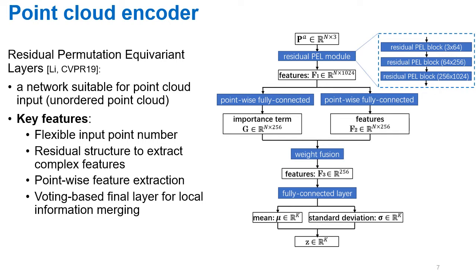Here are some key features of this network. Firstly, it can take a flexible number of input points N, such that we can train and test with a different number of points. Furthermore, it has a residual structure that has many shortcut connections. In total, it consists of 27 layers, therefore complex features can be learned. The network extracts point-wise features first, then each point's feature will be merged into a global feature using each point's importance term and each point's feature term.